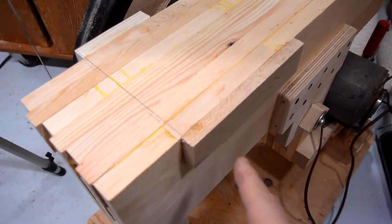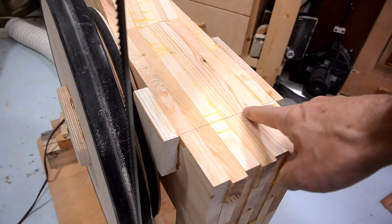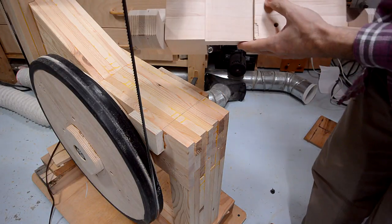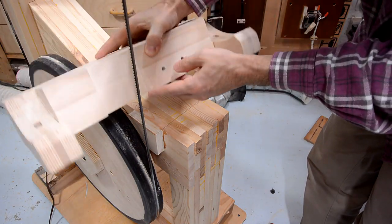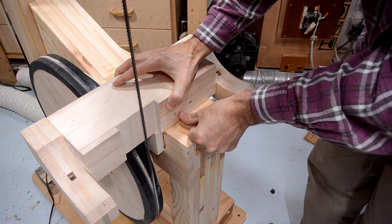I glued on an extra piece of hardwood here, and here to give the trunnion beam more bearing surface. To locate where the trunnion beam goes, this notch and this notch need to be centered on the wheel, and the blade in terms of forward and back position.